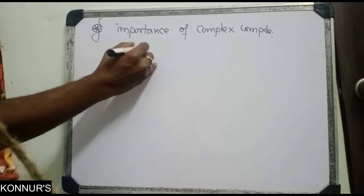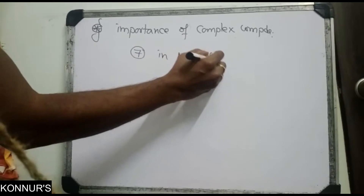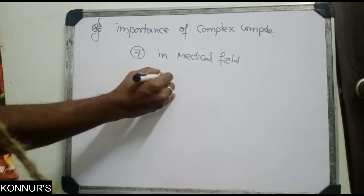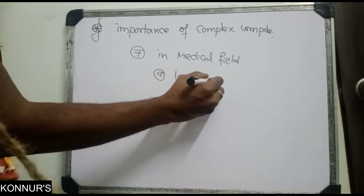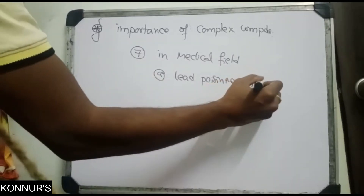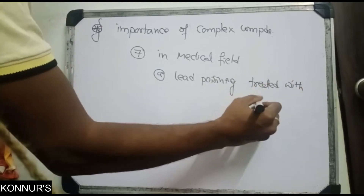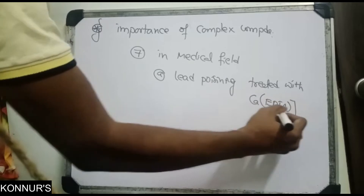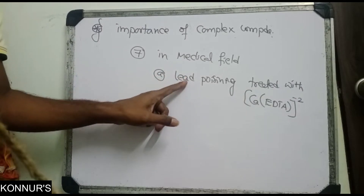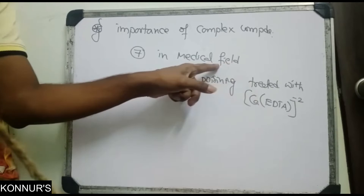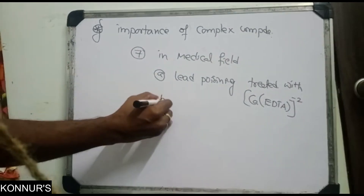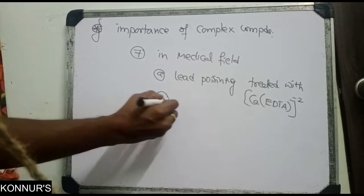In the medical field, complexes are also useful. For lead poisoning, the patient is treated with calcium EDTA. The heavy metal lead is exchanged: lead combines with EDTA and is eliminated from the body, while calcium comes out — this is the chelation therapy principle.